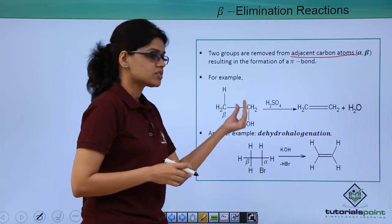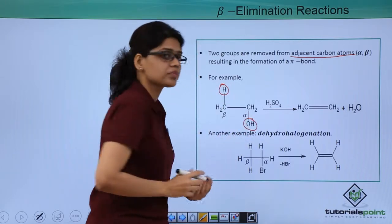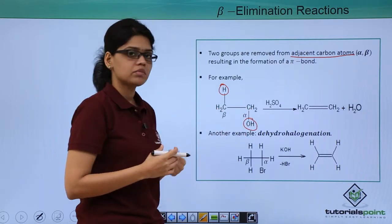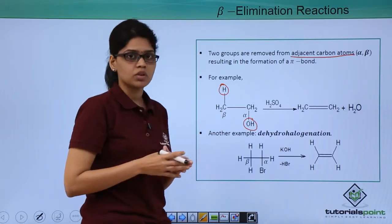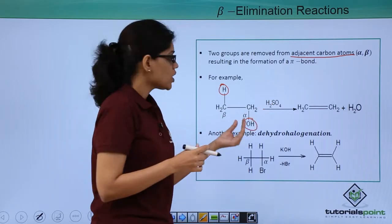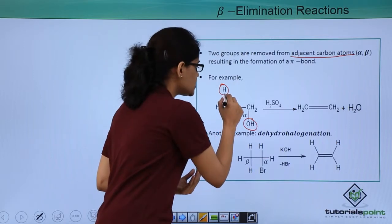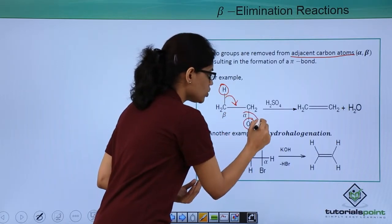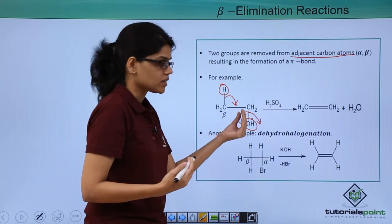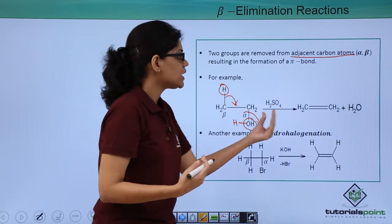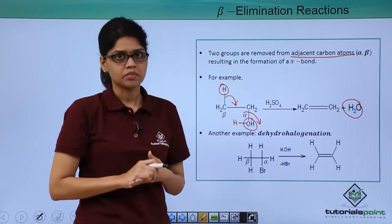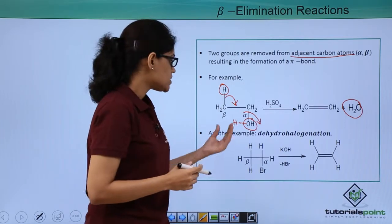Let us look at an example: CH3CH2OH, where hydrogen and OH are positioned such that the carbon bearing OH is the alpha carbon and the adjacent carbon is the beta carbon. When this molecule is subjected to acidic conditions in the presence of a strong acid like H2SO4, OH gets protonated such that the bond shifts and the protonated OH group leaves as H2O — a very good leaving group. With the elimination of this water molecule, you get a final product which is ethene. This is also called dehydration.